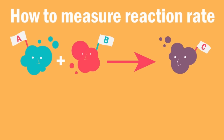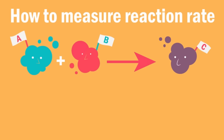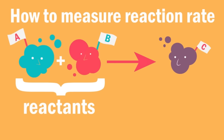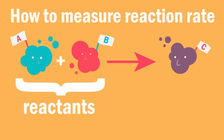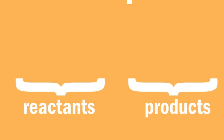The rate of a chemical reaction can be measured in two ways. The first way is to measure how quickly the reactants — the substances on the left of the arrow in the equation — decrease. The second way is to measure how quickly the products — the substances on the right of the arrow in the equation — increase.